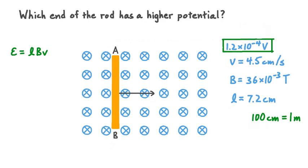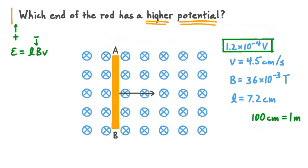Now the second part asks: which end of the rod has a higher potential? Positive electrical charges, by definition, have a higher electrical potential than negative electric charges. So another way to answer this question is to figure out which end of the rod has more positive electrical charge. If we assume the conducting rod is electrically neutral, it has the same number of positive charges as negative charges. For one end to have higher potential than the other, something has to cause charge separation — one type of charge moves to one end, and the other type moves to the opposite end.